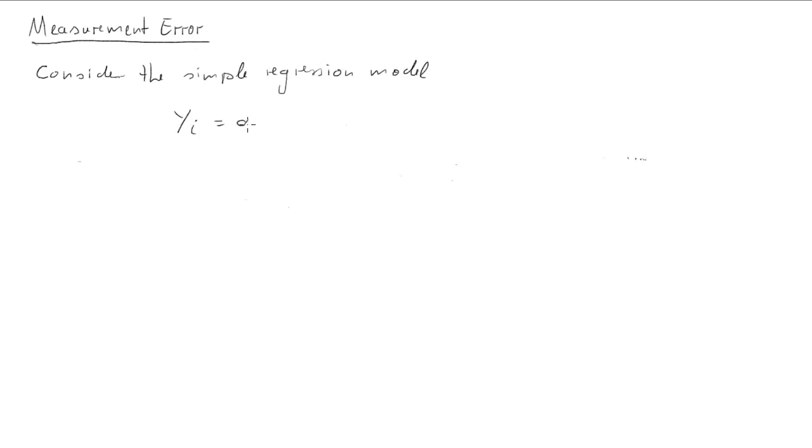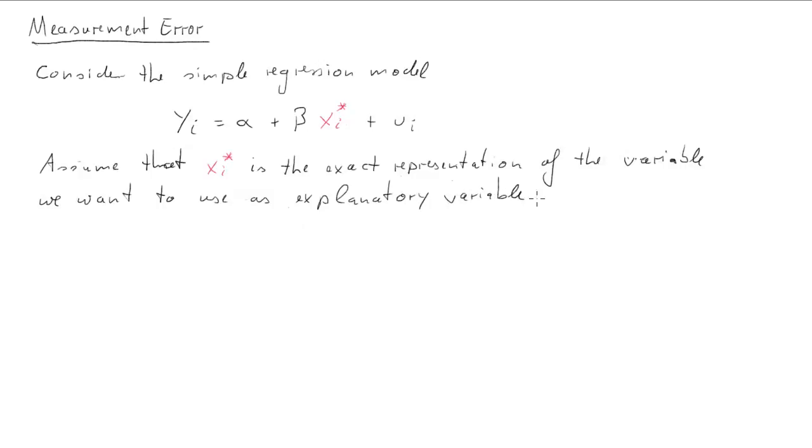Looks very familiar, yi being a function of an explanatory variable, now xi asterisk. I call that asterisk for reasons which will become obvious soon. We shall now assume that this variable xi asterisk is the actual variable we are interested in. So that's what we want as explanatory variable. So let's say that's the income of family i, income of the ith family.